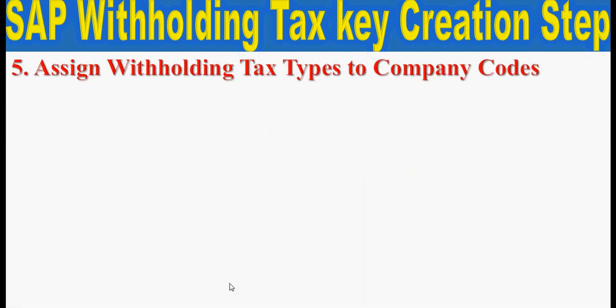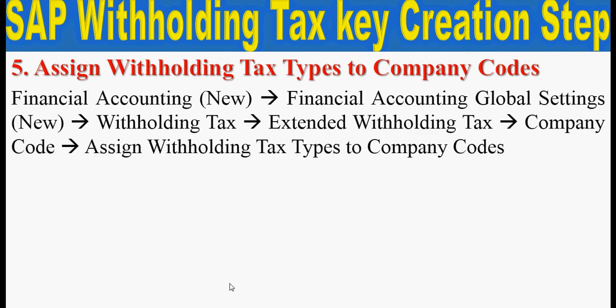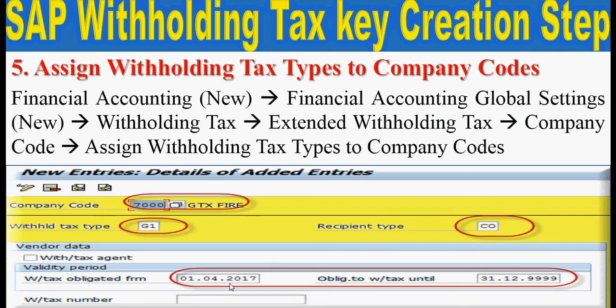The fifth step is to assign the withholding tax type to the company code. Go through this path: Financial Accounting New > Financial Accounting Global Settings New > Withholding Tax > Extended Withholding Tax > Company Code > Assign Withholding Tax Type to Company Code. Click on new entries, enter your company code, withholding tax type, recipient type, and the validity date, then press save.